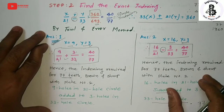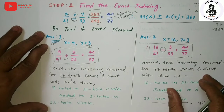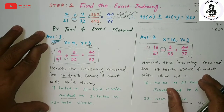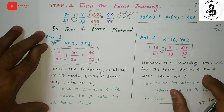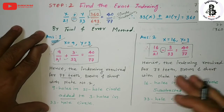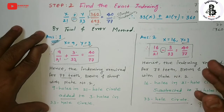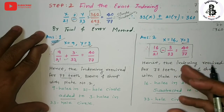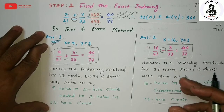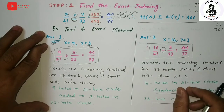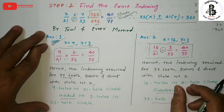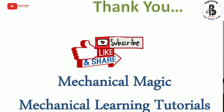By this method you can easily understand the compound indexing process and calculate it in a simple way - either adding or subtracting from your movements. If you like it, then subscribe and share Mechanical Magic - Mechanical Learning Tutorials. Thank you very much.